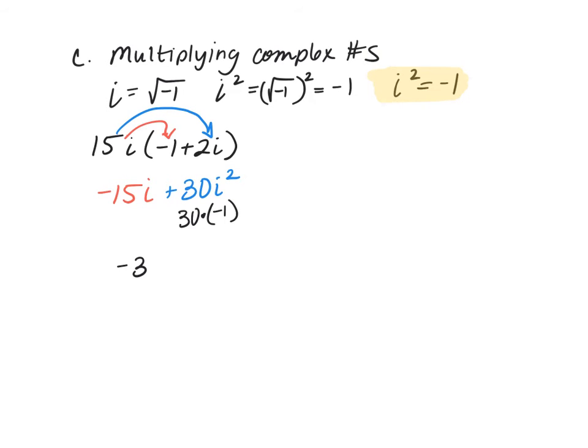And so we write the real number first. It's a plus bi. So real and then we write imaginary. So the negative 30 is going to be first minus 15i. And don't go back and refactor that. The point was to multiply it out.